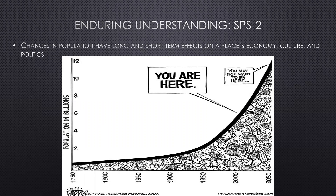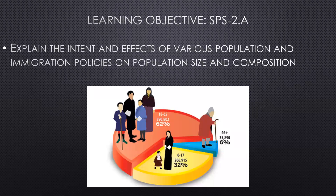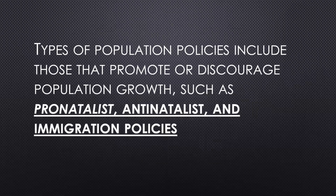The enduring understanding for topic 2.7 is that changes in population have long and short-term effects on a place's economy, culture, and politics. The learning objective is to explain the intent and effects of various population and immigration policies on population size and composition. We'll be looking at pro-natalist policies, anti-natalist policies, and immigration policies.